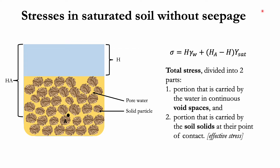The concept of effective stress can be illustrated by drawing a wavy line through point A that passes through only the points of contact of the solid particles. Let's call this wavy line, line AA. It passes through A and through the points of contact of the solid particles.